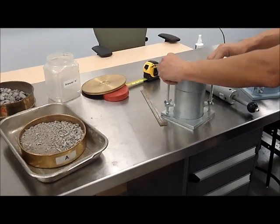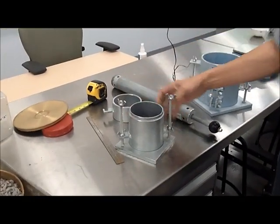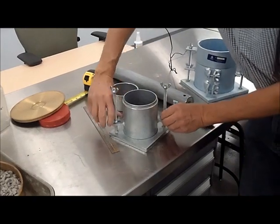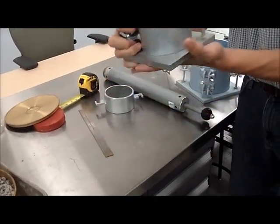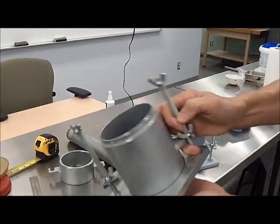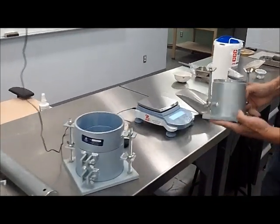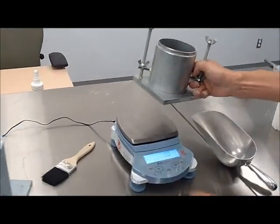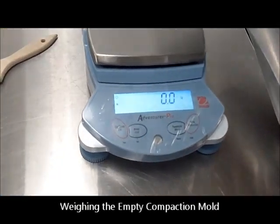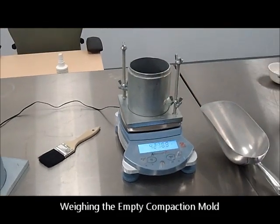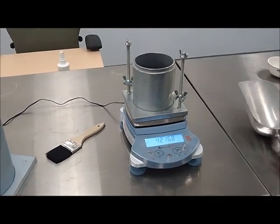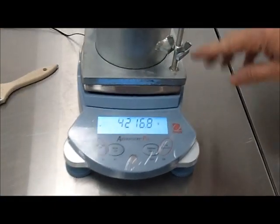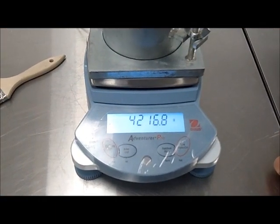The first piece of information that we're going to need is the weight of the mold by itself, empty and clean. So we're going to put it on a scale that has been zeroed, and we record this weight. This is the weight of the compaction mold empty.